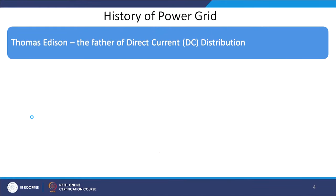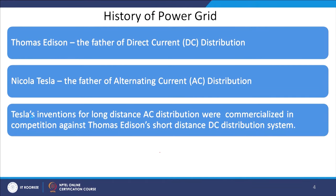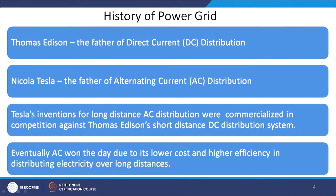The history of the power grid is quite interesting. Thomas Edison is considered to be the father of direct current distribution, who perhaps created DC technology. Nikola Tesla is treated as the father of the AC distribution system. Tesla's invention for long-distance AC distribution was commercialized in competition against Thomas Edison's short-distance DC distribution system, and eventually AC systems won the day due to its lower cost and higher efficiency in distributing electricity over long distances.